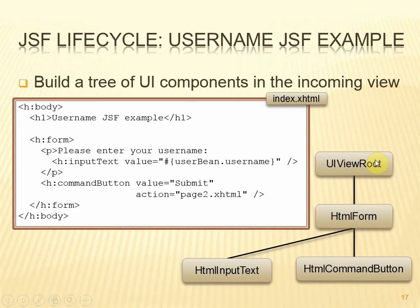So let's take a step-by-step view of the lifecycle for the example we've been looking at, starting with index.xhtml. The tree always has at its root a UIViewRoot object — a standard class provided as part of the JSF environment. Because we've encountered a form tag, that will generate an object of type HTMLForm, one of the standard underpinning classes. Within the form, we've got an input text tag and a command button tag, so there will be an HTMLInputText object and an HTMLCommandButton object underneath the form in the tree.